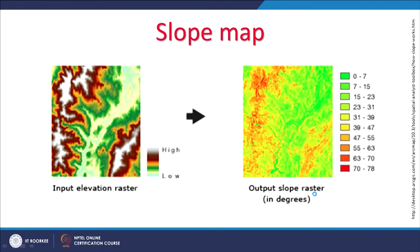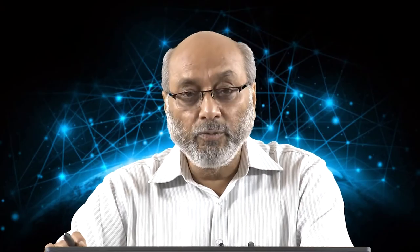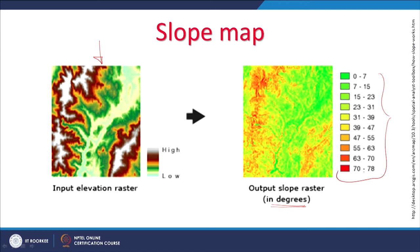This is a typical example: when a digital elevation model is subjected to slope calculation, this is the output you get in degrees. How you classify the result is a different matter — you may classify into only 5 categories with a range. Classification methods for continuous data we have already discussed, so you can apply equal distance, equal area, quantile, or standard deviation classification accordingly.